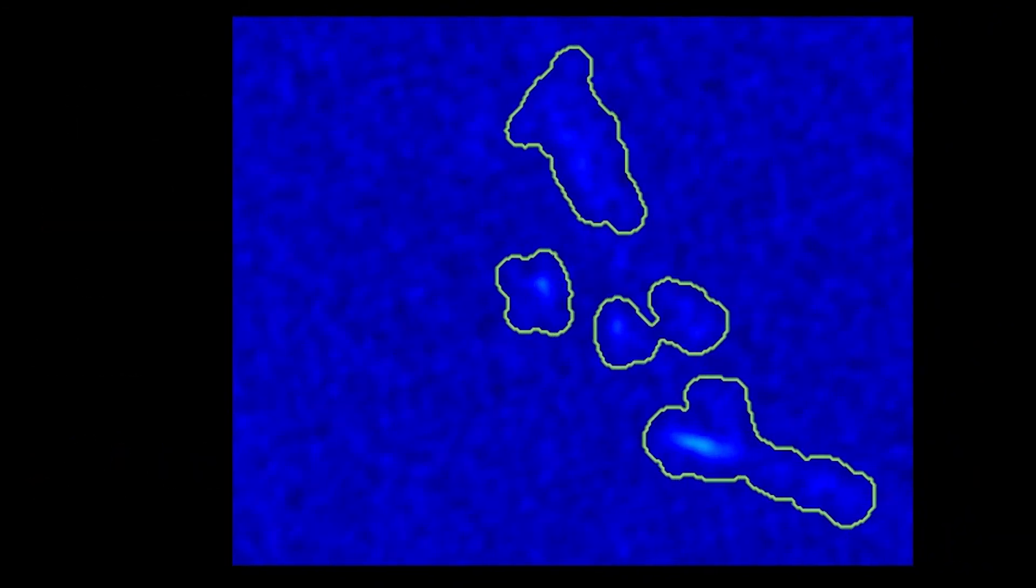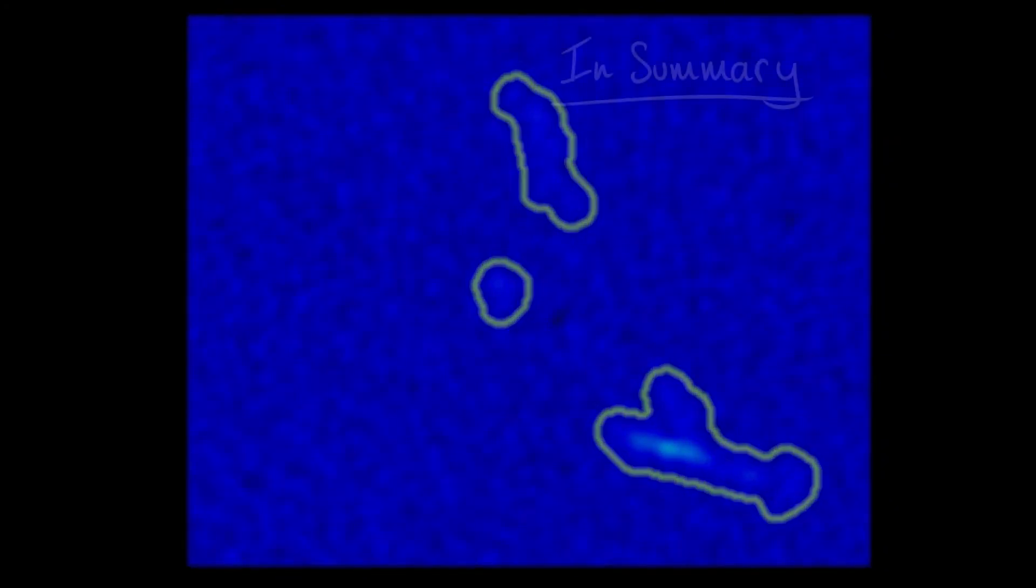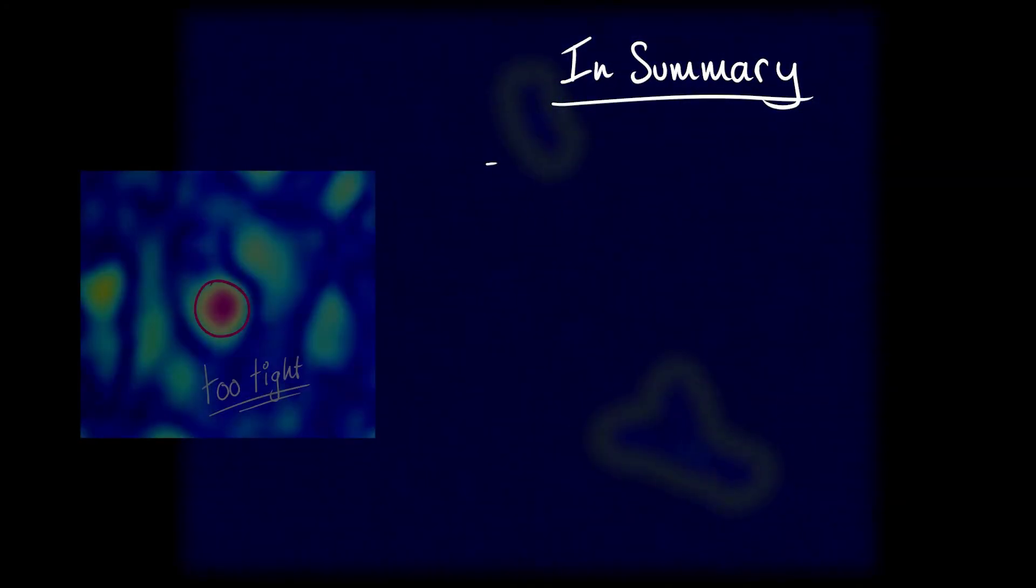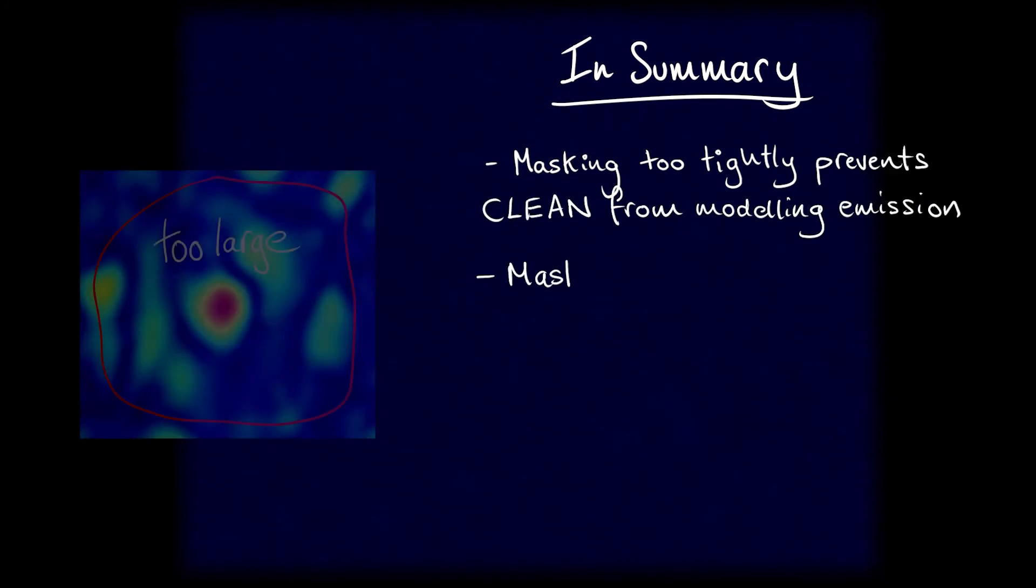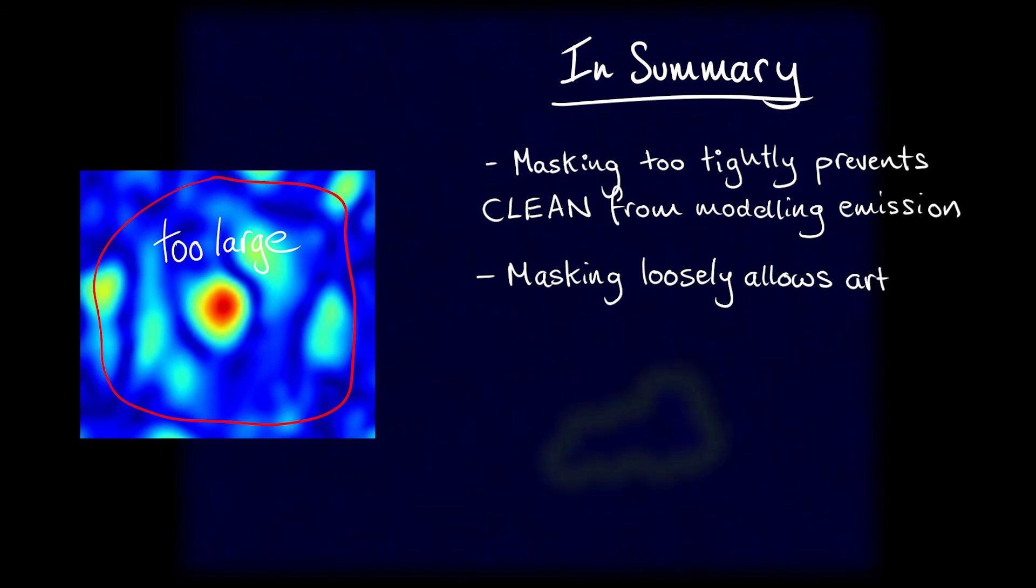We've just looked at masking while cleaning. It all boils down to this. Masking too tightly doesn't allow clean the flexibility to model emission in your image well. Masks that are too large might include noise peaks or side lobes in your sky model.